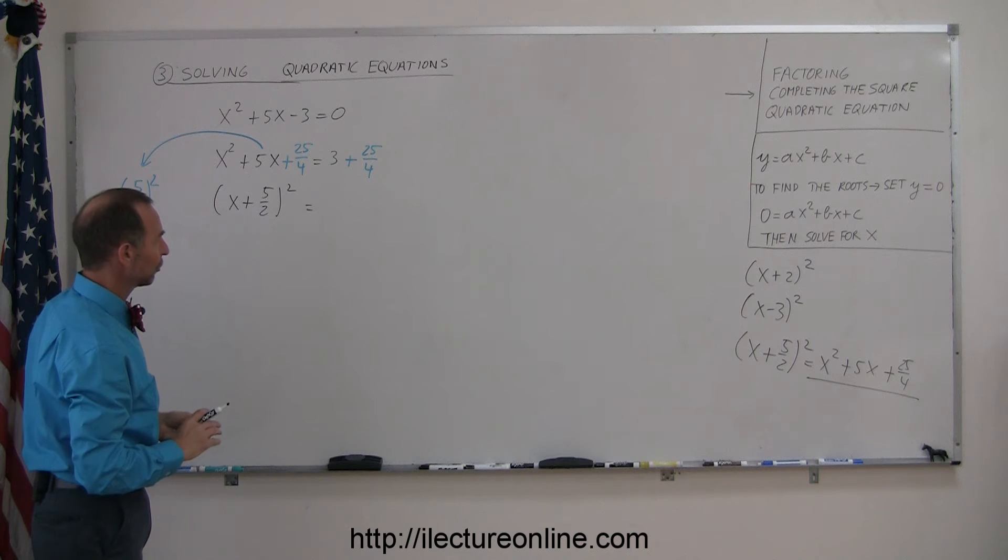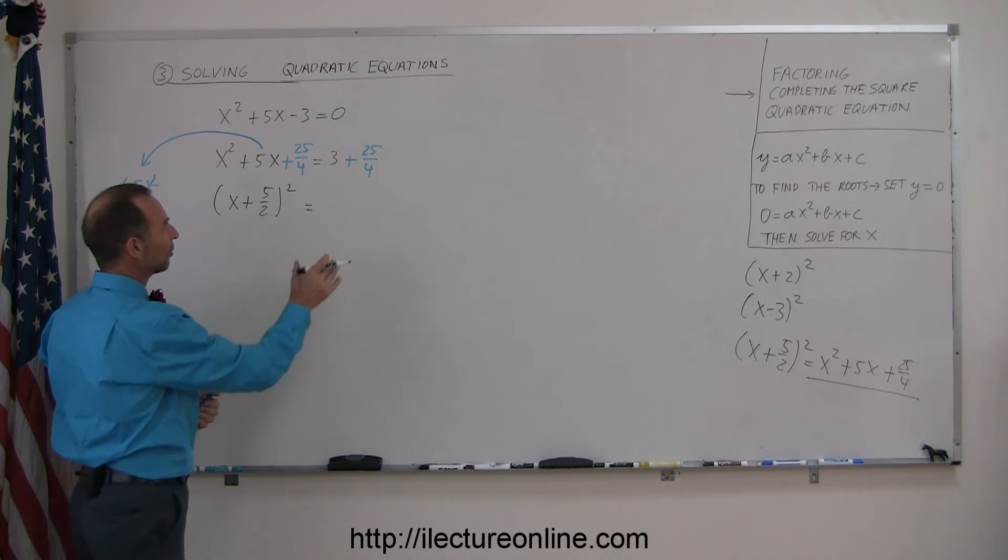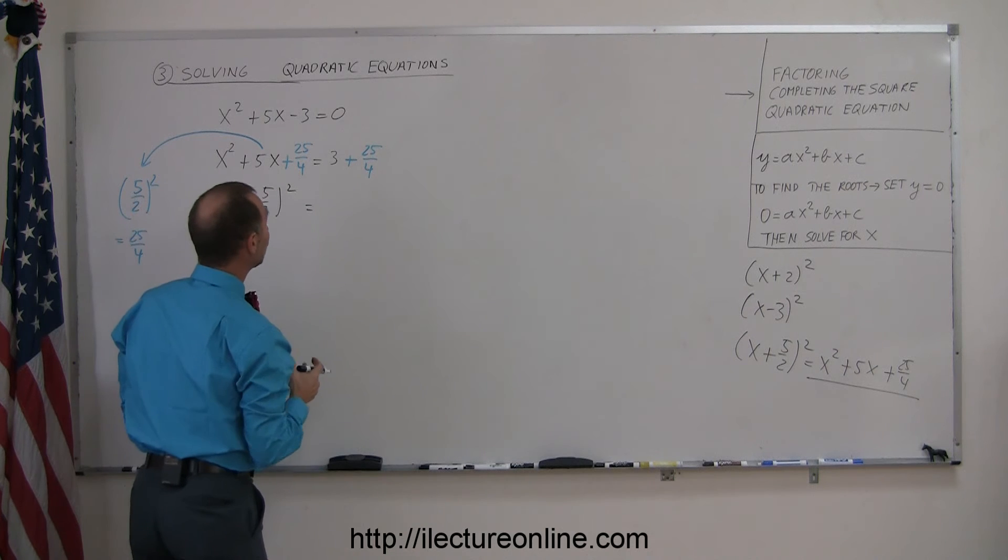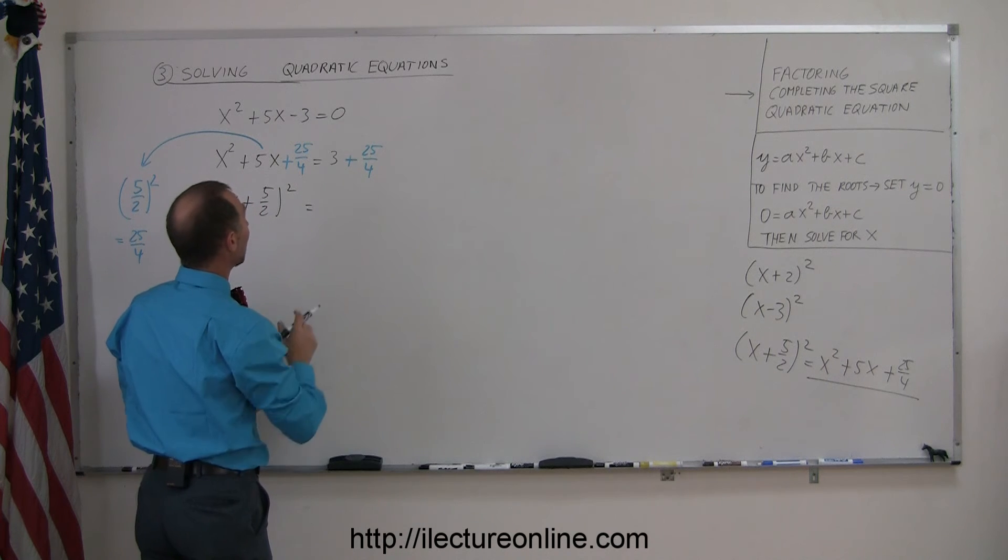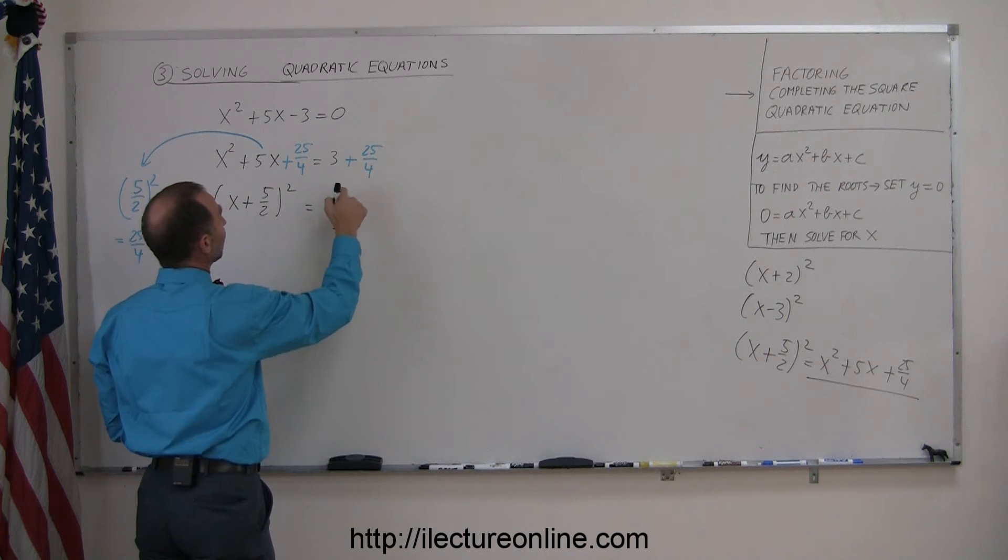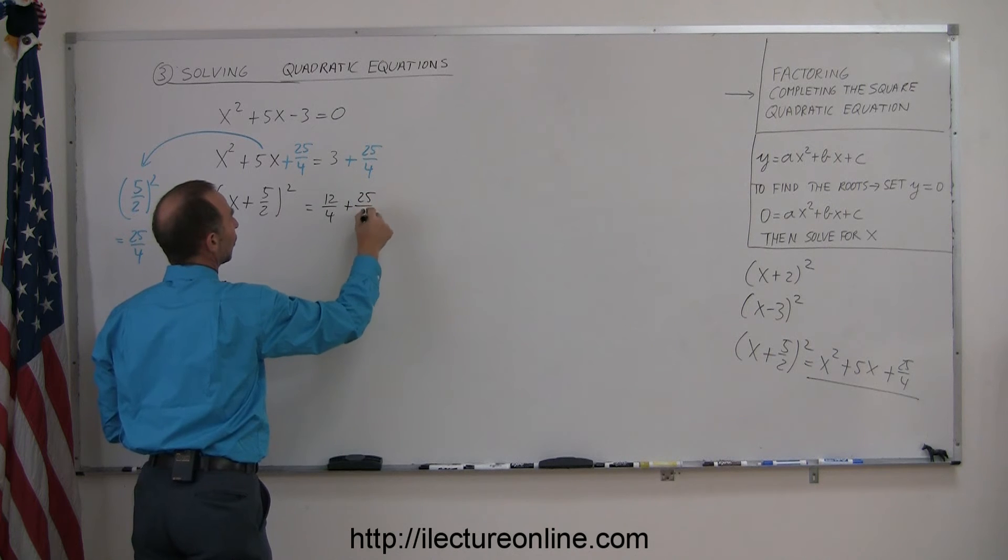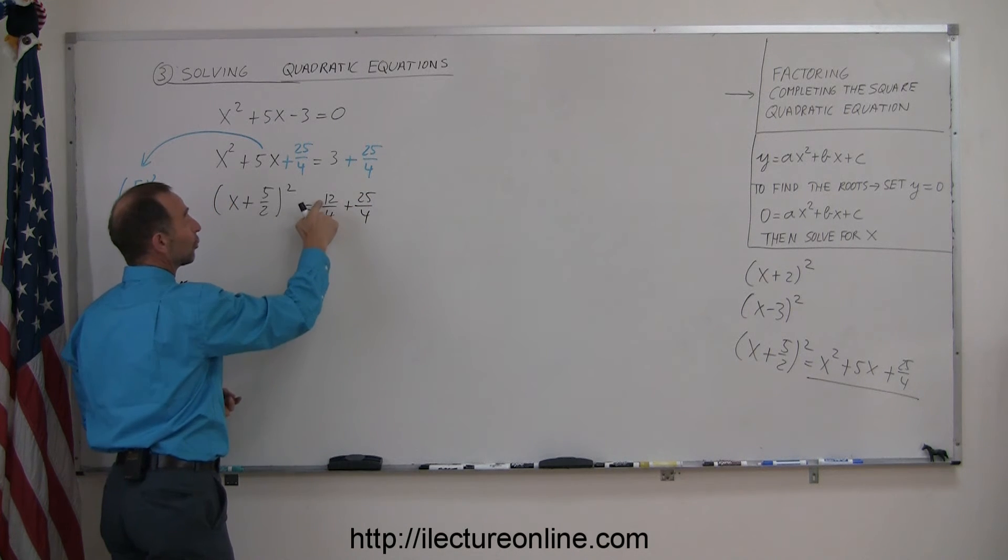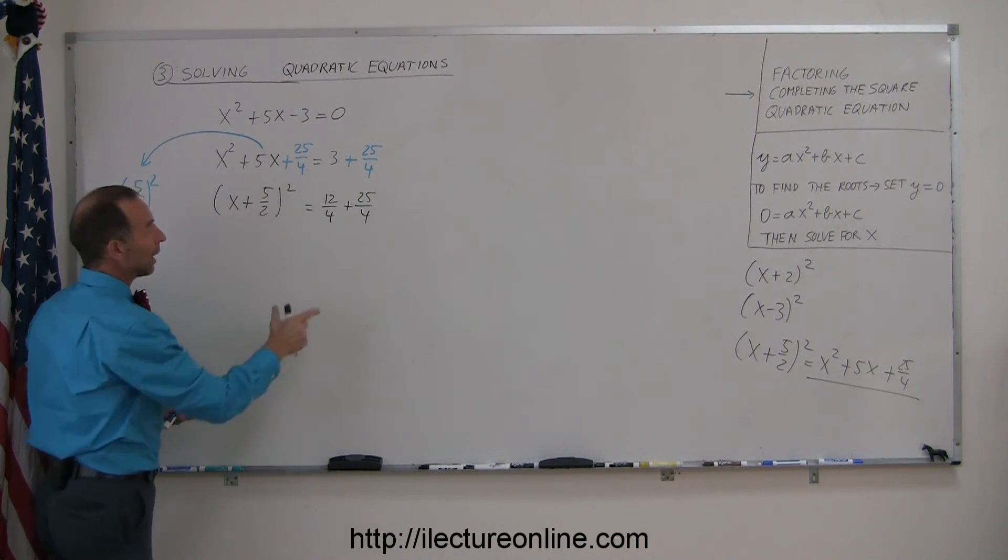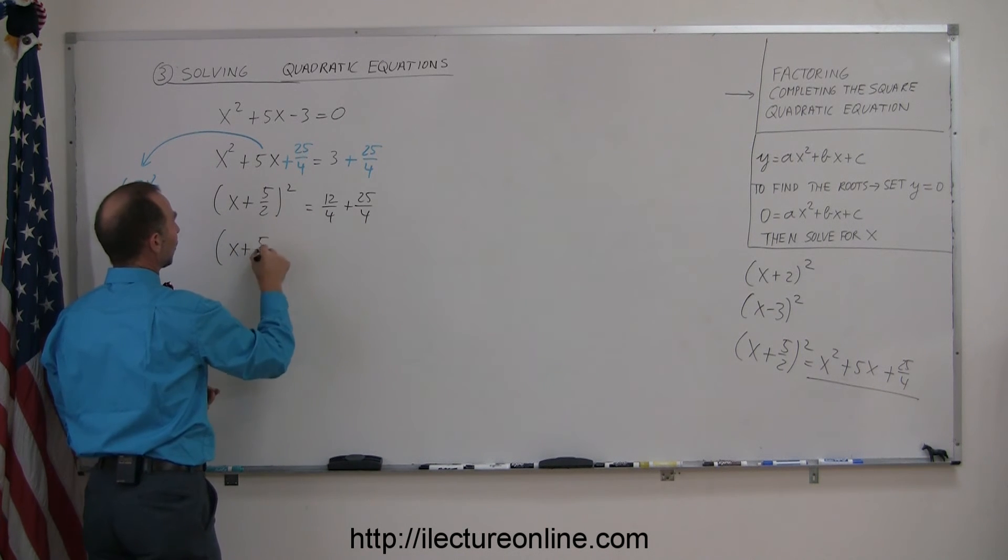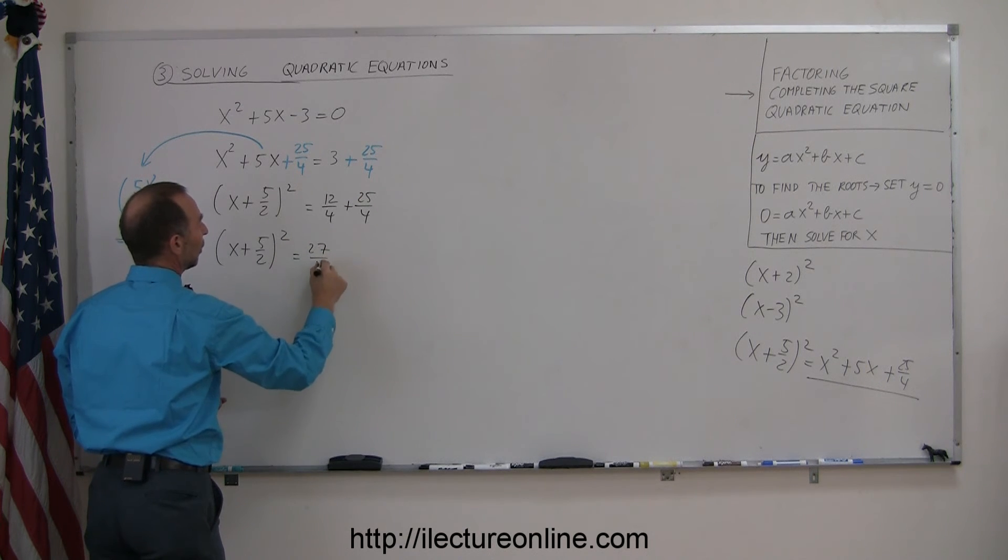But now we still have to add the two terms on the right side, and you can see that they don't have the same denominator, so I have to write that as two numbers over the same denominator, so this is the same as if I multiply the numerator and denominator by 4, I get 12 over 4 plus 25 over 4. Notice, if I divide the 4 into 12, I get the 3 again, but now I have the same denominator, I can add those together, I have x plus 5 over 2 quantity squared is equal to 12 plus 25 or 27 over 4.